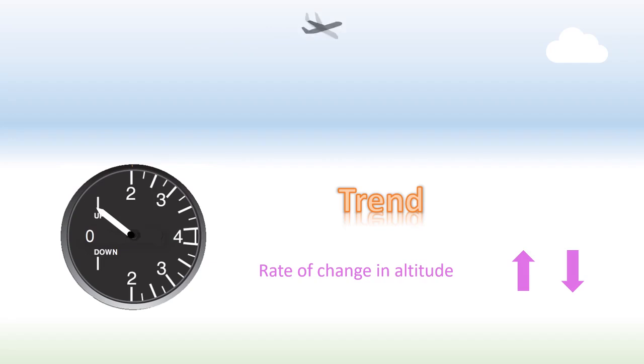When it comes to descents, things flip. Think of the trend indication this way: when the needle moves in the same direction as the airplane's trajectory, the rate of change is increasing, otherwise, it's decreasing.